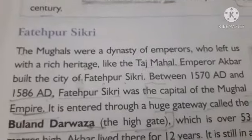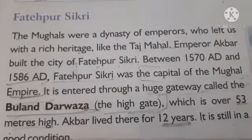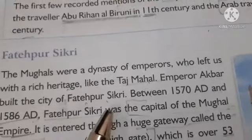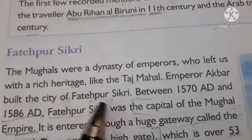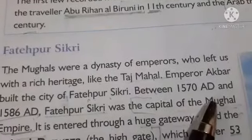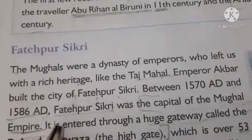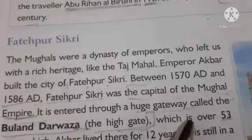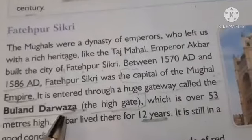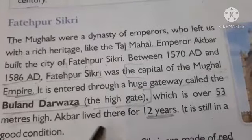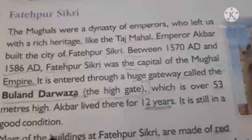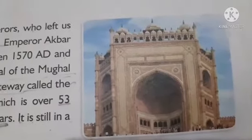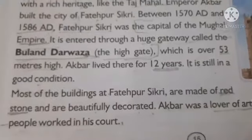Next we have Fatehpur Sikri. The Mughals were a dynasty who left us with rich heritage like Taj Mahal. Akbar built the city of Fatehpur Sikri between 1570 AD and 1586 AD, and it was the capital of the Mughal Empire. It is entered through a huge gateway called the Buland Darwaza, which is over 53 meters high. Akbar lived there for 12 years. Most of the buildings at Fatehpur Sikri are made of red stone and are beautifully decorated.